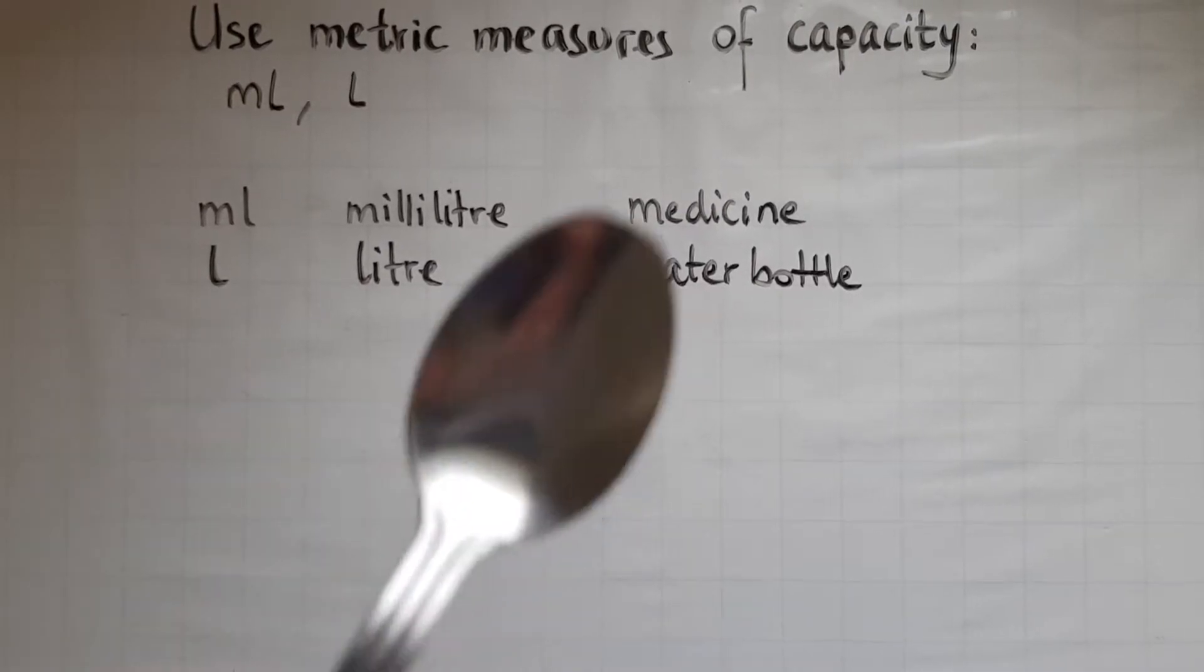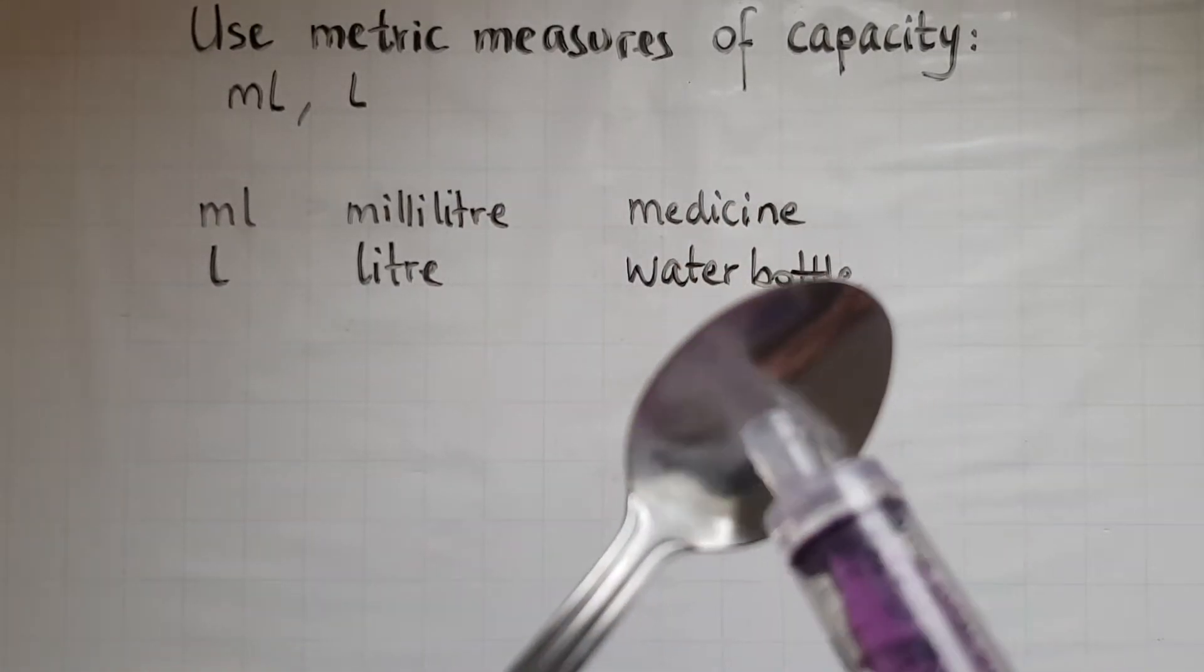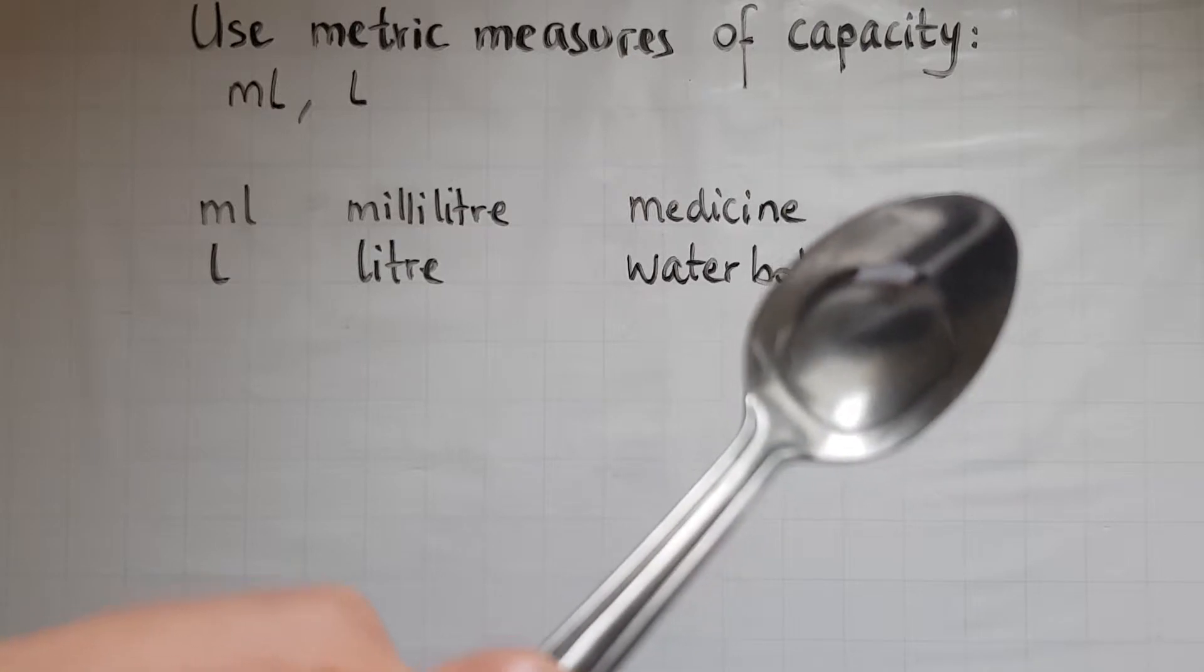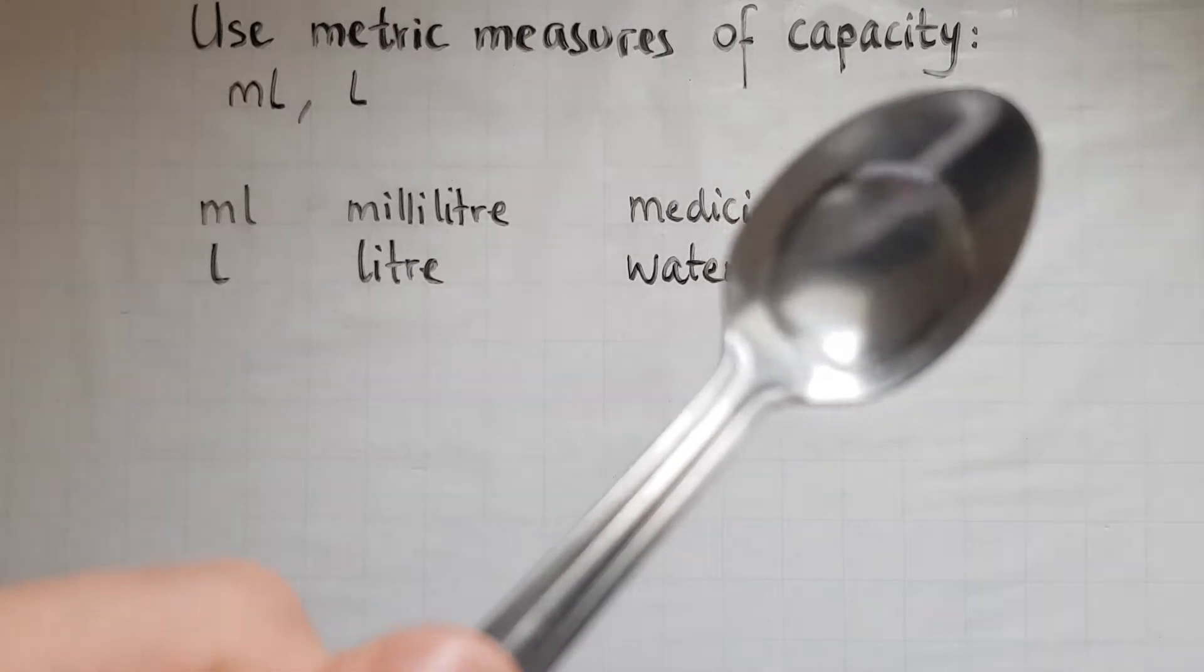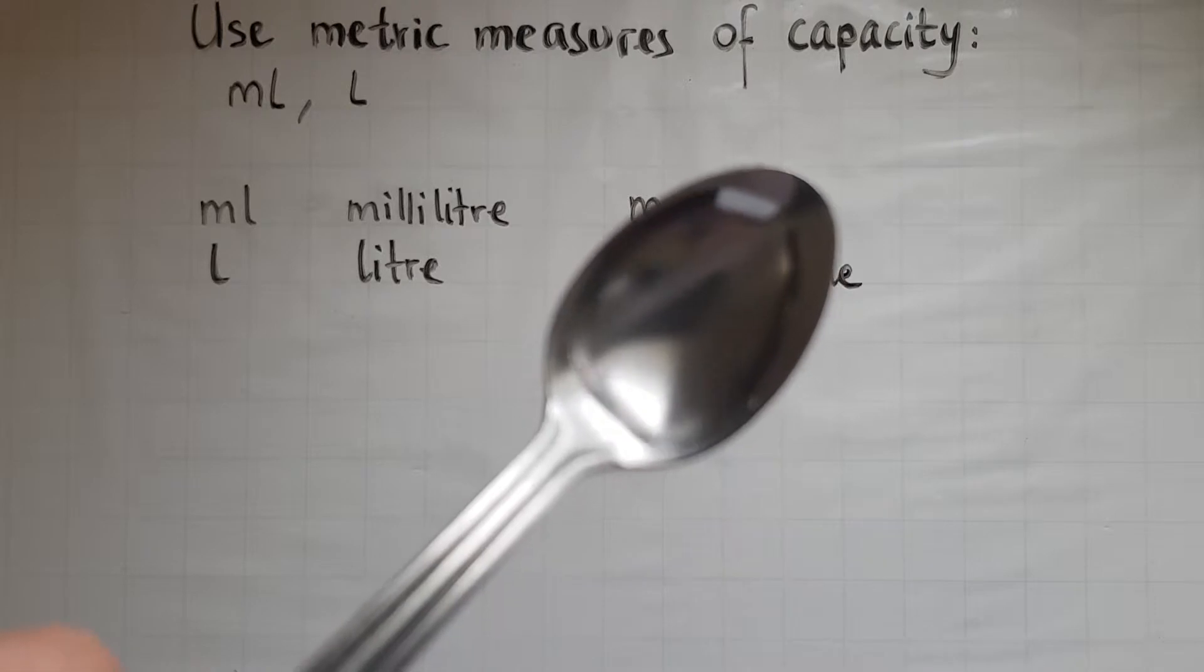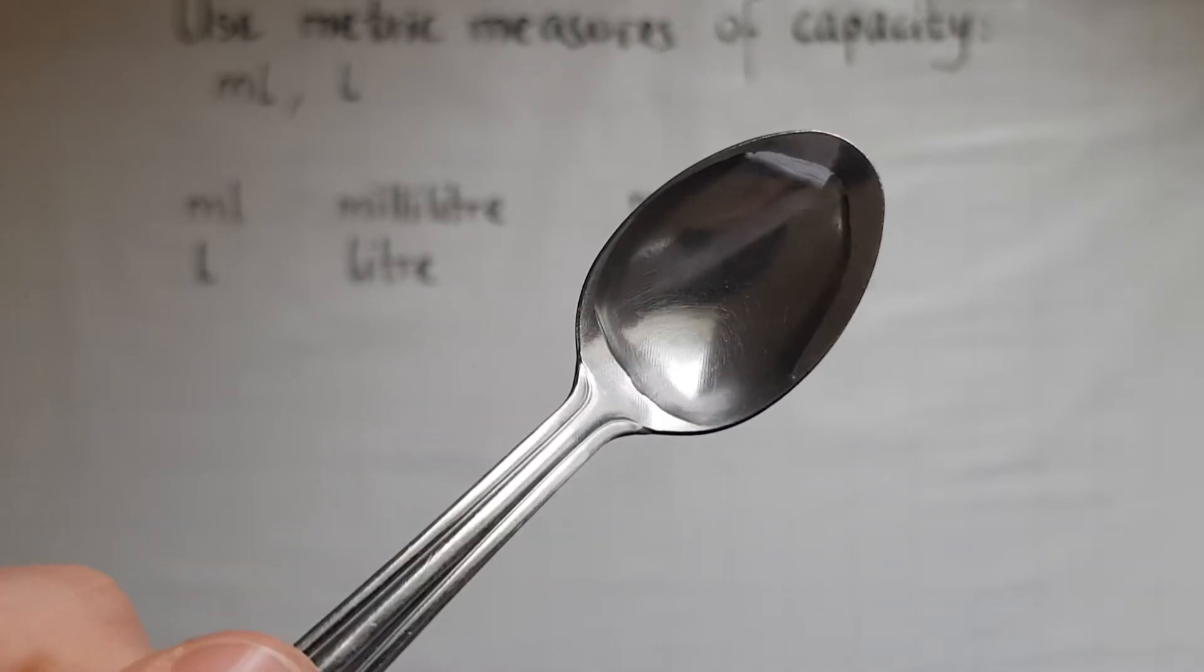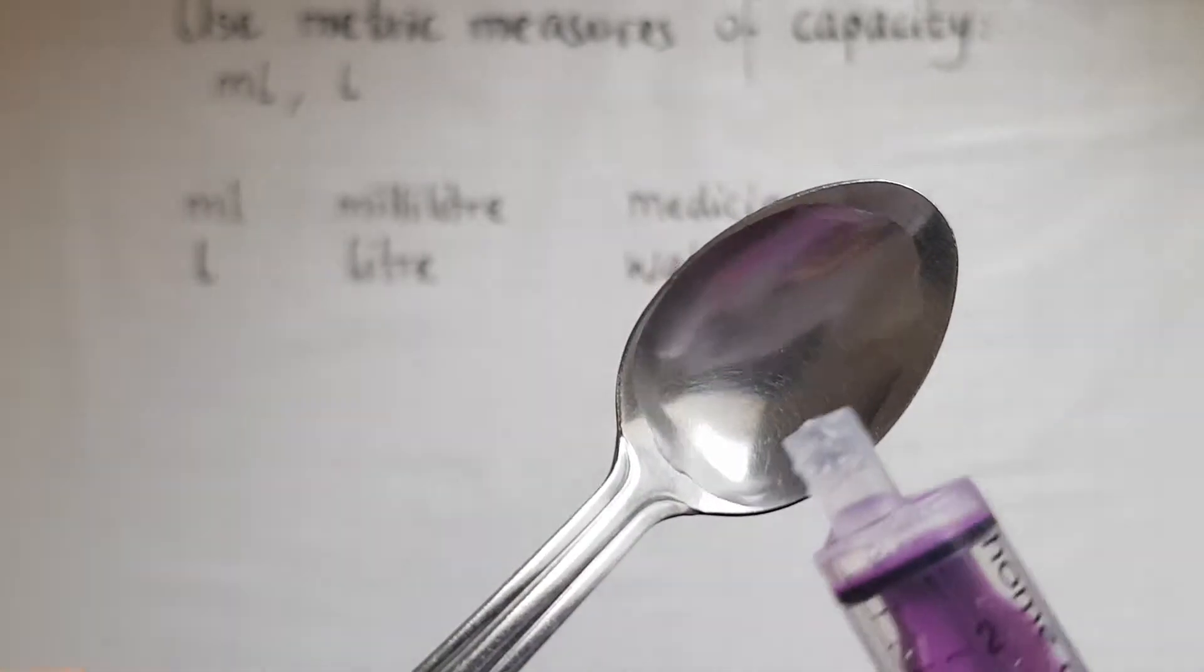So I'll empty that one milliliter now into a teaspoon and you can see how much it actually fills. And I'll add another one. So that is two and the spoon is nearly filled because you actually need two and a half milliliters to fill a teaspoon.